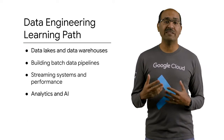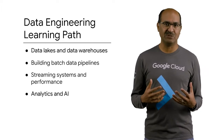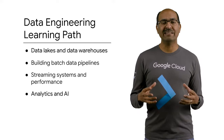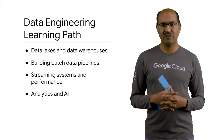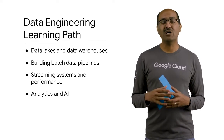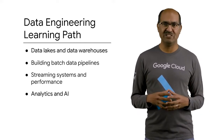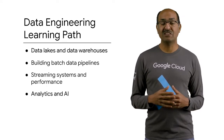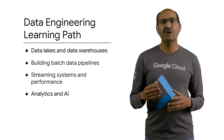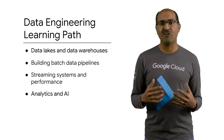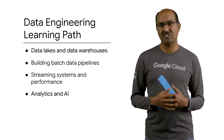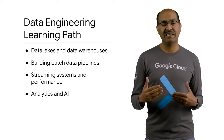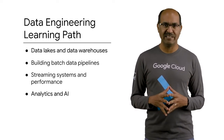As part of the data engineering learning path in this course, we will first discuss the differences between data lakes and data warehouses. Next, we talk about the primary role of a data engineer, which is to build data pipelines. In the third course of this specialization, we will look at streaming systems and performance. And in the final course of the series, we go over analytics and artificial intelligence as they pertain to data engineering.